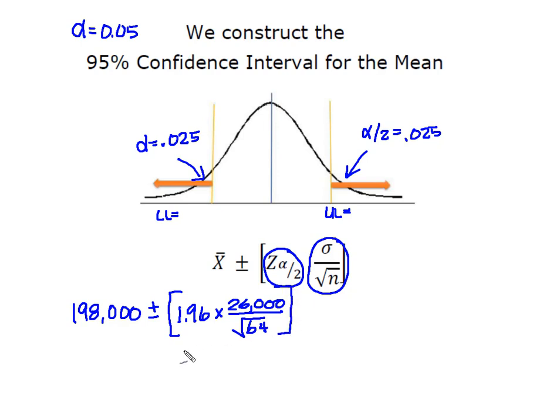I'm going to reduce this portion right here then I'm going to add it and subtract it to X bar and when I do that I know I'm going to end up with $198,000 plus and minus $6,370.